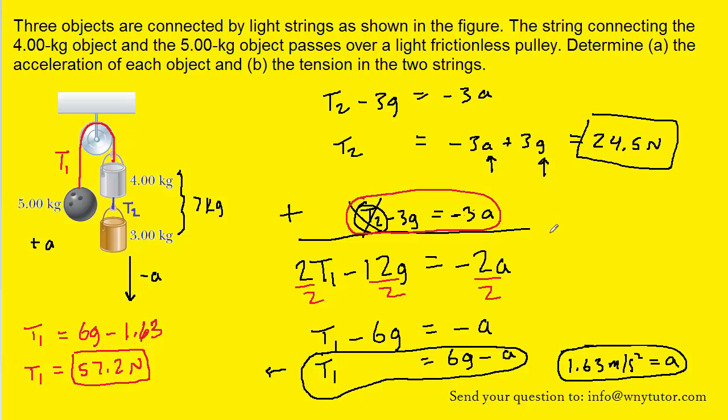We'll notice that the tensions in the two ropes are different. t2 which was marked as blue in the figure has only a tension of 24.5 newtons. t1 which is colored in red has a much greater tension 57.2 newtons.